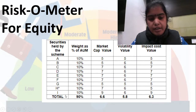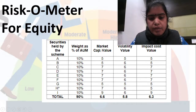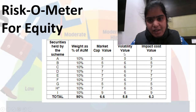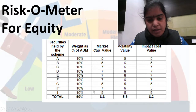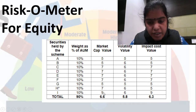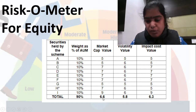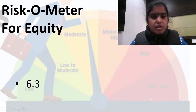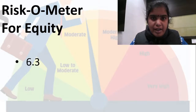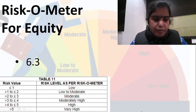J was cash, so a score of 1 is assigned to it. We then calculate the average of these numbers across all securities. For market cap, the average comes to 6.6; for volatility, the average is 5.8; and for impact cost, the average is 6.3. When we average these three values — 6.6, 5.8, and 6.3 — the overall average comes to 6.3. Since it is more than 5, the product falls in the 'very high' risk category.